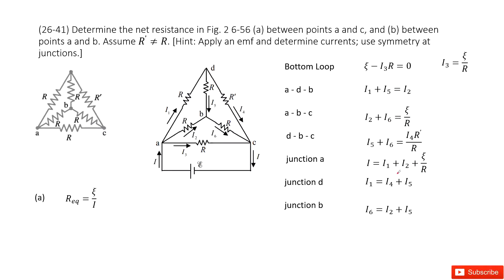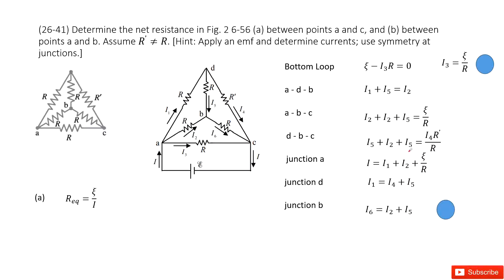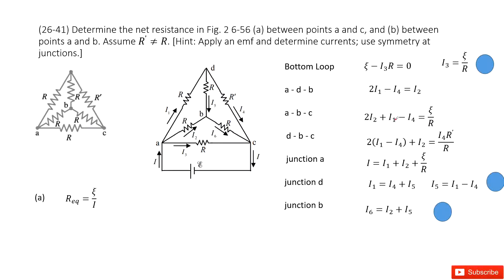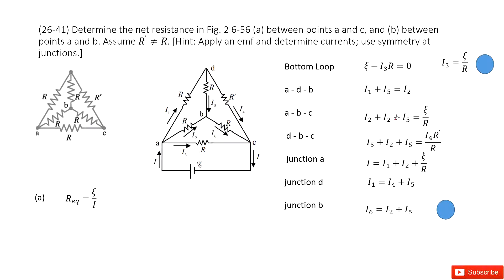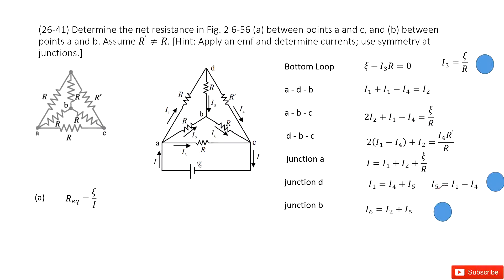Now in the equations we have I5 and I6. We remove I6 by substituting I2 plus I5 in its place, and organize to get 2 times I2 plus I5. Then we substitute I5 as I1 minus I4 and put it inside. We then use I1 and I2 to replace I4, organizing the equations further.